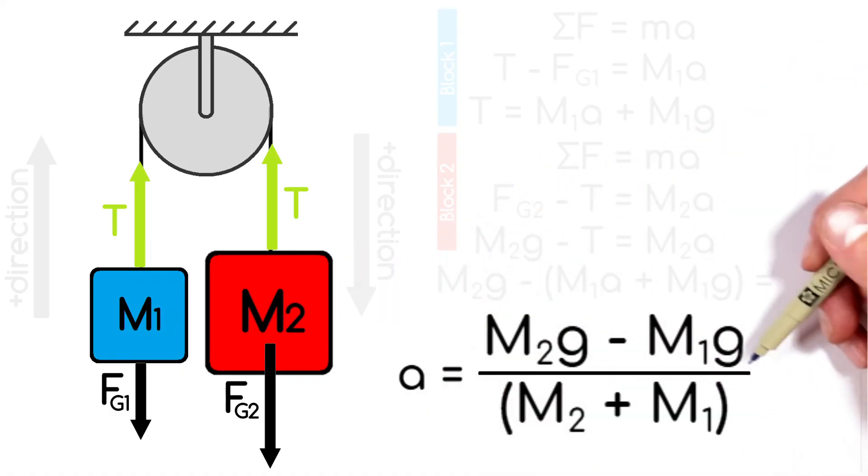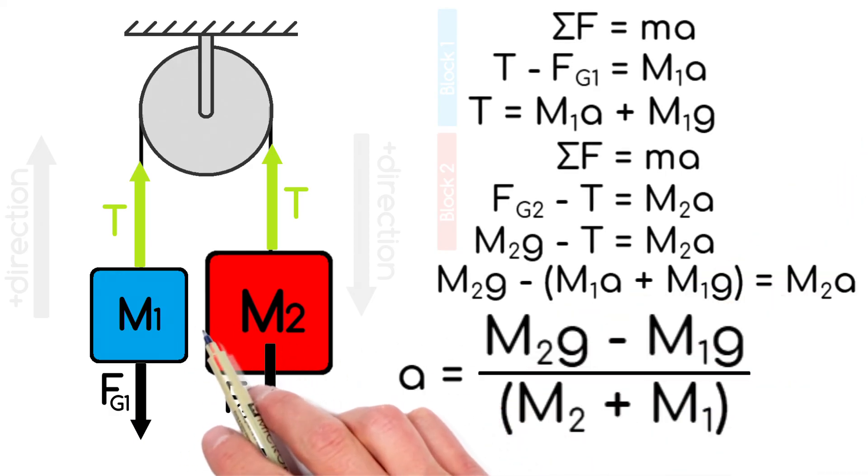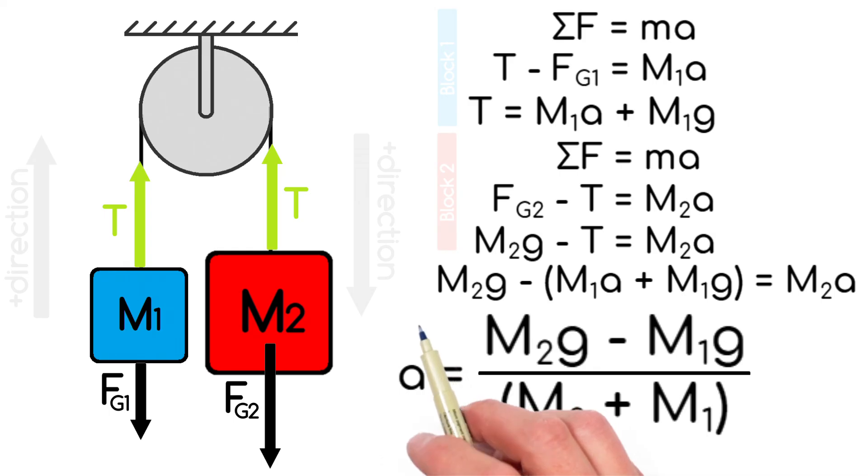But with that misconception aside, this has been how to apply free body diagrams to an Atwood machine in order to solve for the acceleration of either of those blocks. I hope you found this useful. And on that note, that's all for now.